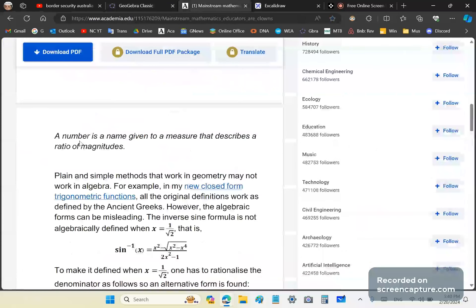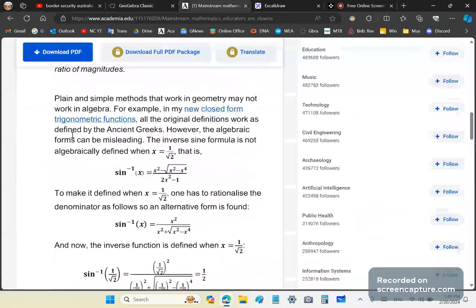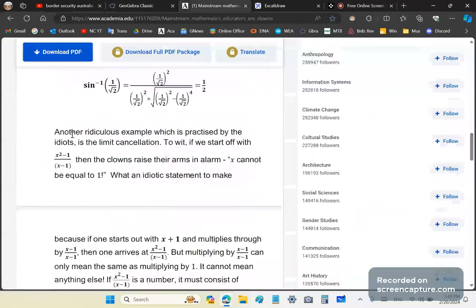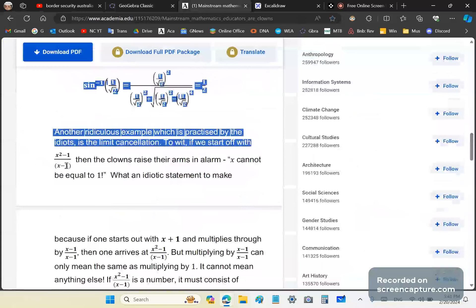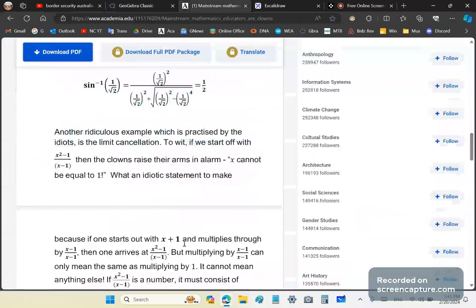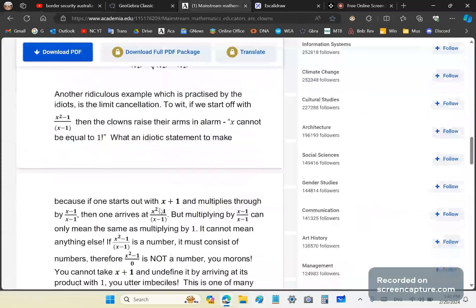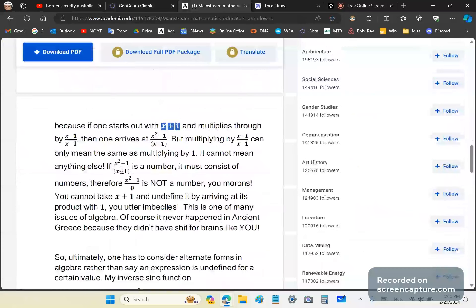So what mainstream academics tend to do is they start off with something like x squared minus one, this one here, x squared minus one over x minus one, and then they raise their arms in alarm: x cannot be equal to one. What an idiotic statement to make. Why is it idiotic? Because if you start out with x plus one and you multiply through by x minus one over x minus one, you will get this expression here. But multiplying by x minus one over x minus one can only mean the same as multiplying by one. It cannot mean anything else.